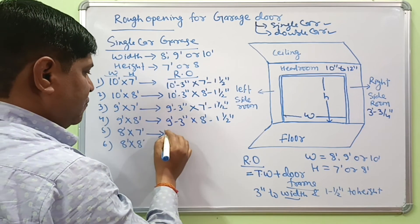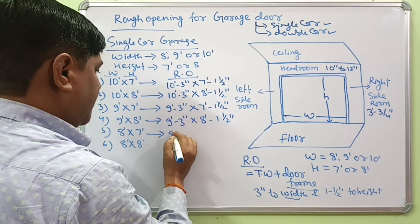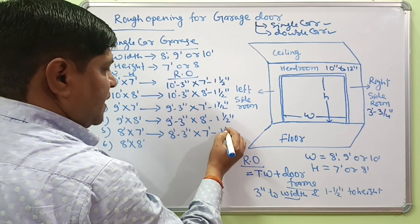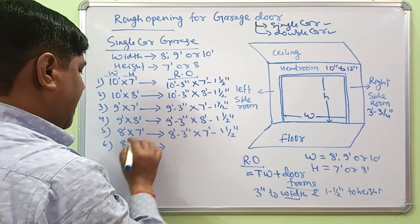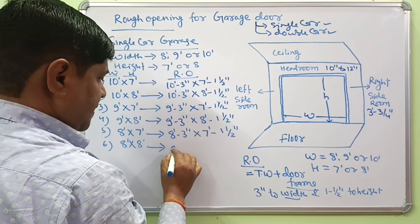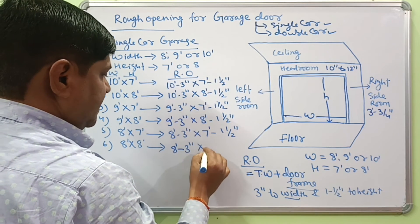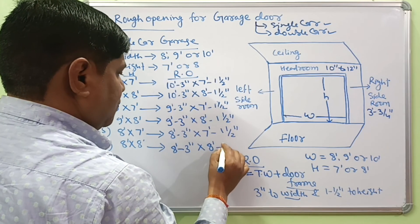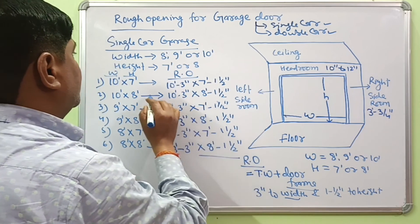If your single car dimension is 8 by 7 foot, then you need a rough opening of about 8 foot 3 inches by 7 foot 1 and a half inches. If your single car dimension is 8 by 8 foot, then the rough opening should be 8 foot 3 inches and the height should be 8 foot 1 and a half inches.